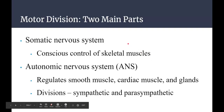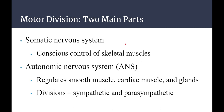In the motor division you have two main parts. You have the somatic nervous system — soma comes from Greek for body. The somatic nervous system controls the skeletal muscles that you have voluntary and conscious control over. That's the first main part of the motor division.